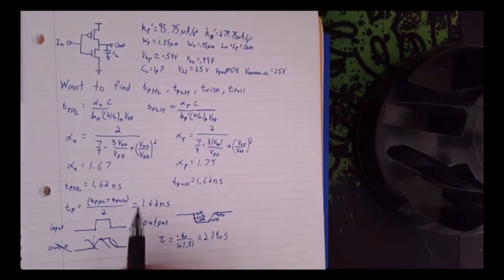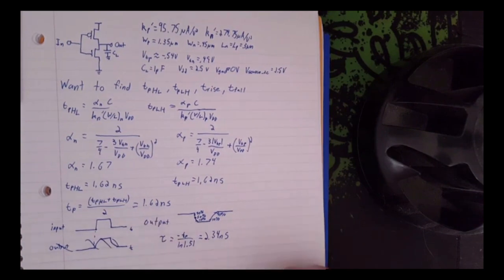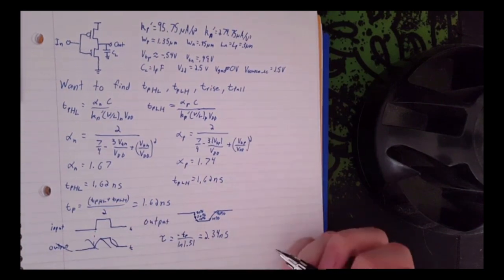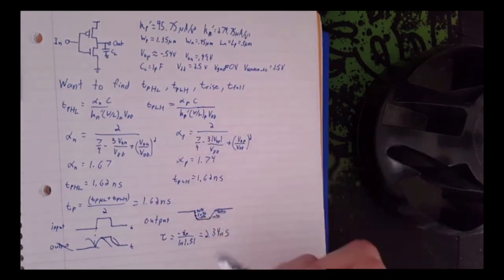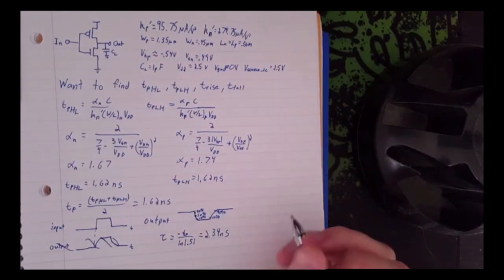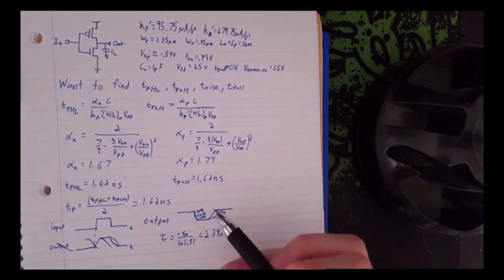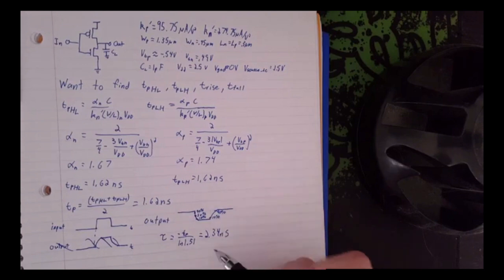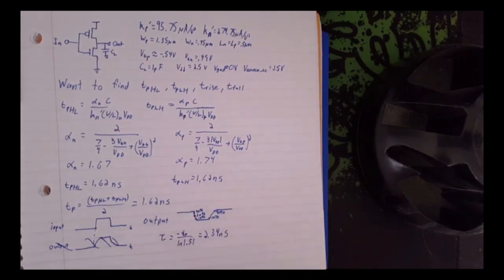As you can see, this tau is greater than our TP. That makes sense because the TP is just 50%, where tau is normally around 65% of the total. So your tau should be slightly larger than your TP.